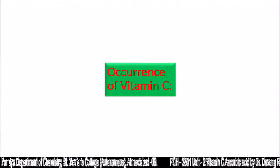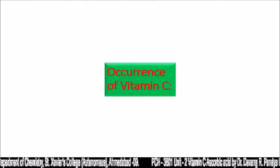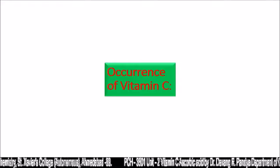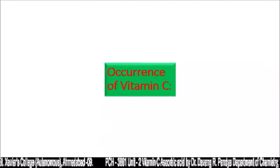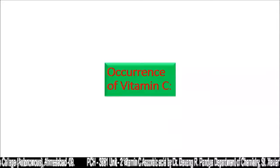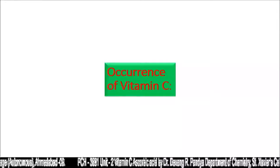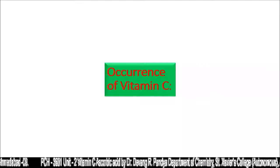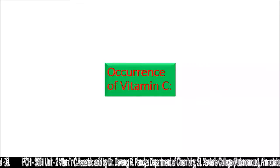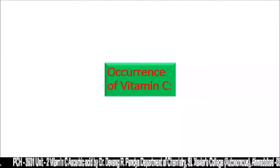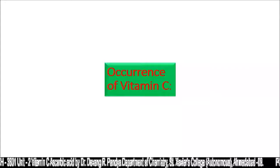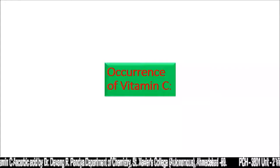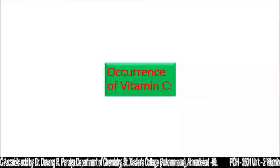Now, occurrence of vitamin C — the source of vitamin C. When we study the chemistry of any compound, we need to study the source, its purification or occurrence, then physical and chemical properties, structural information, and the application. When we include all these five steps together, we can learn the chemistry of that particular compound.